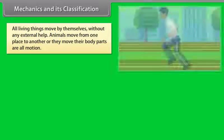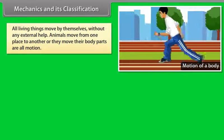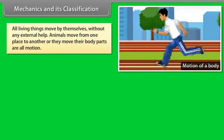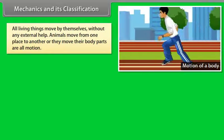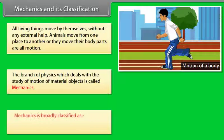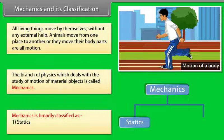Mechanics and its classification: All living things move by themselves without external help. Animals move from one place to another, or they move their body parts — all of this is motion. The branch of physics which deals with the study of motion of material objects is called mechanics. Mechanics is broadly classified as: one, statics; and two, kinematics.